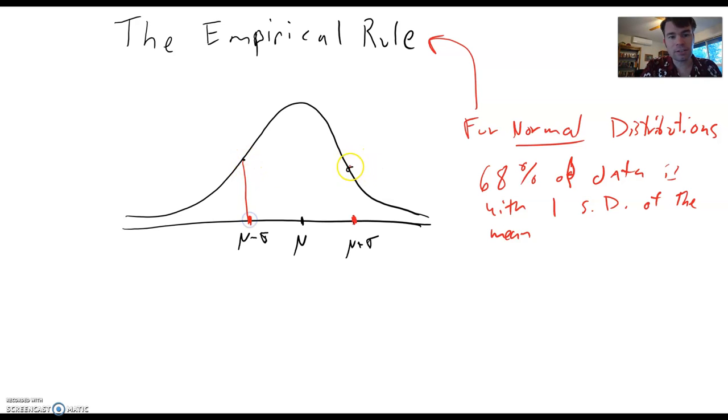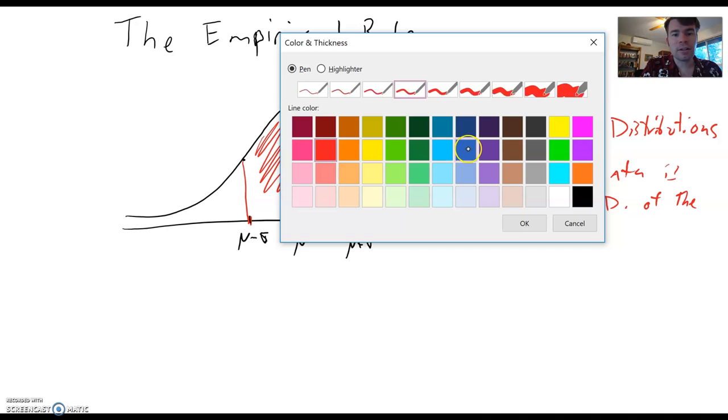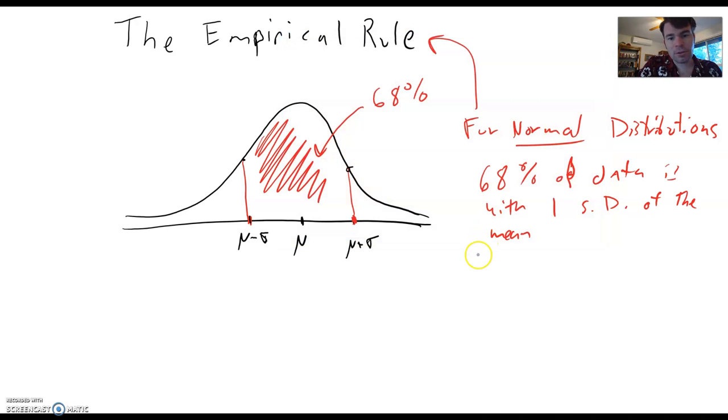And if you look at this picture, what we're saying is this area right here, this is 68% of the area, approximately. Now what is 68% of the area? That's 68% probability that the data is within that range. Now if we take this a step further, the empirical rule also says that approximately 95% of the data is within two standard deviations of the mean.